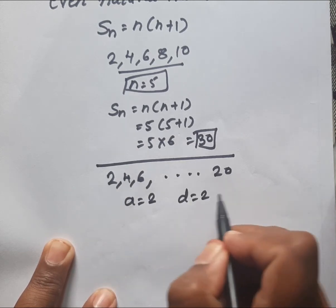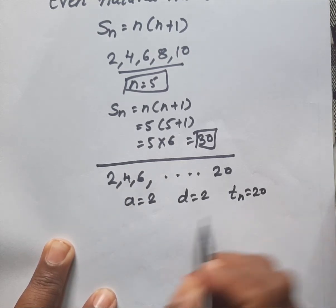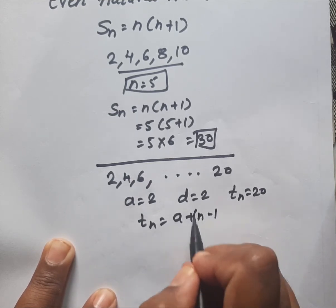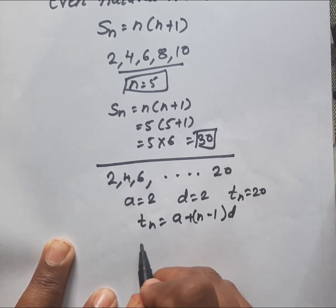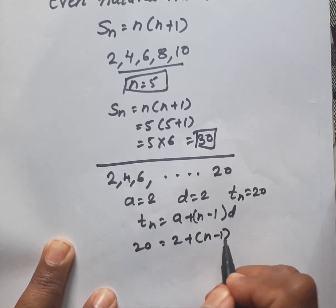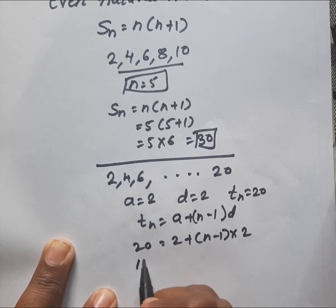tn equals a plus n minus 1 into d. So 20 equals 2 plus n minus 1 into 2. Now we will take the 2 to the other side: 18 equals n minus 1 into 2.